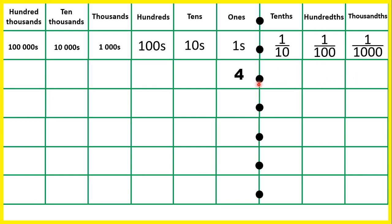It's important to understand that there is really an invisible decimal point on the end of every whole number, but when we're writing whole numbers we don't need to include the decimal point.